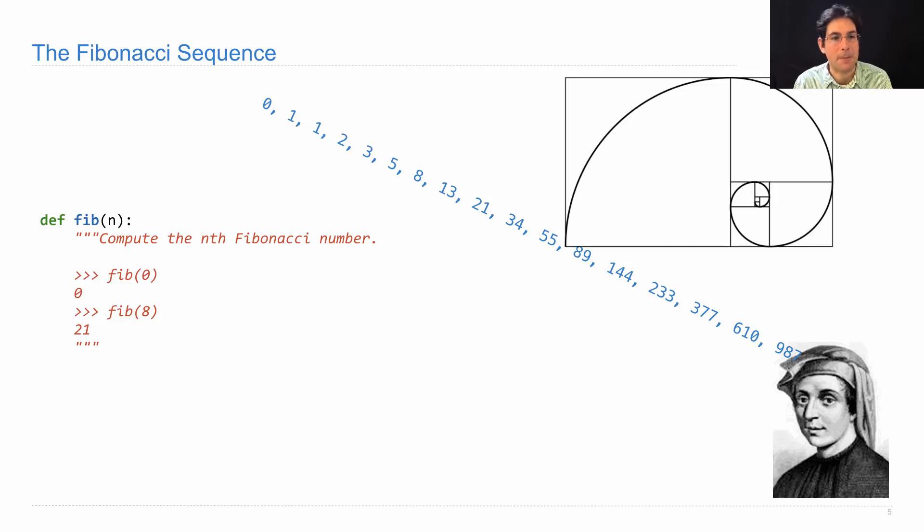How would we compute Fibonacci numbers? We'll write a function that computes the nth Fibonacci number, where we're going to number them starting with 0. So 0 is the 0th Fibonacci number, 1 is the 1st. What's the 4th Fibonacci number? It's 3, the 6th is 8, and the 8th is 21. So if you pass in 8, you should get the 8th Fibonacci number, 21.